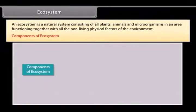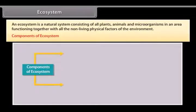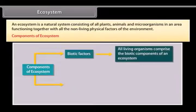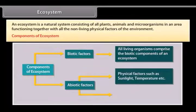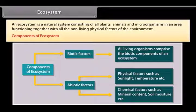Components of ecosystem: Ecosystem comprises the following two components. 1. Biotic factors, including all living organisms. 2. Abiotic factors, which include physical factors such as sunlight and temperature, and chemical factors such as mineral content and soil moisture.